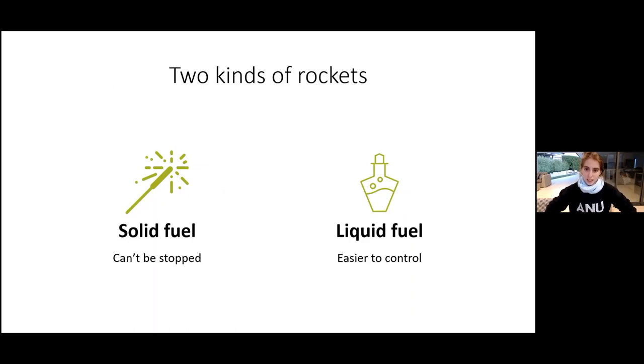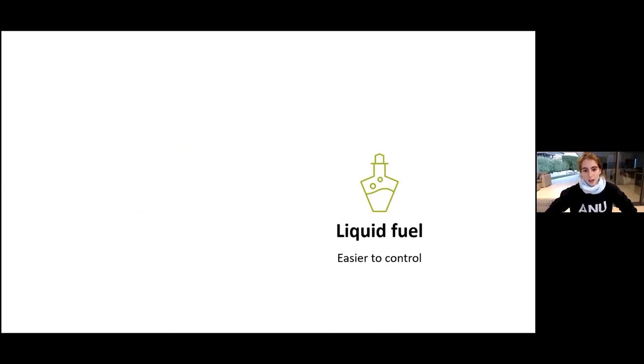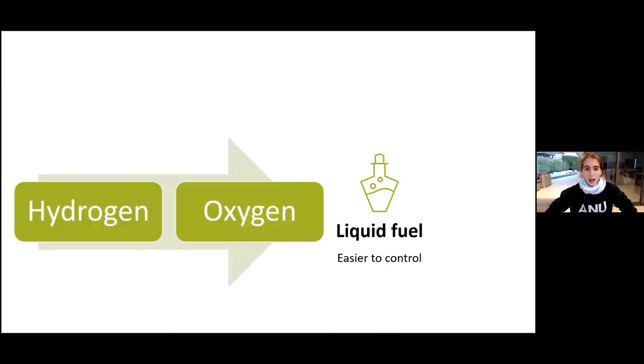The second type of rocket then is a liquid rocket. So you've got much more control over this type of fuel. You're able to actually use this liquid rocket to control the speed of the rocket ship and even turn the rockets on and off completely. So the two main ingredients then of liquid fuel are hydrogen and oxygen and that's what we're going to be making today.